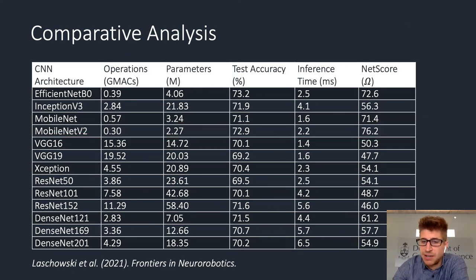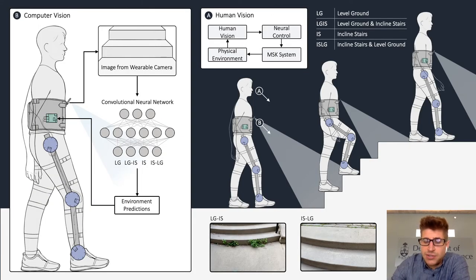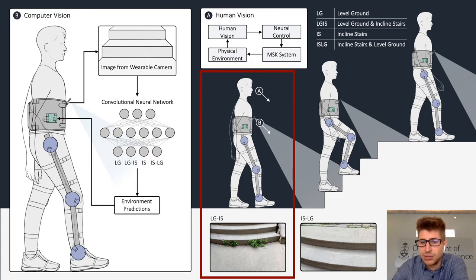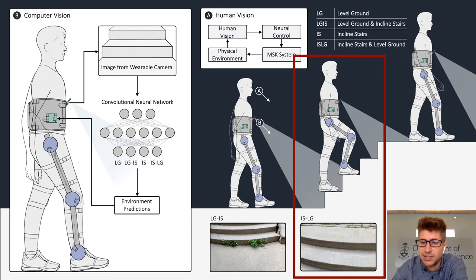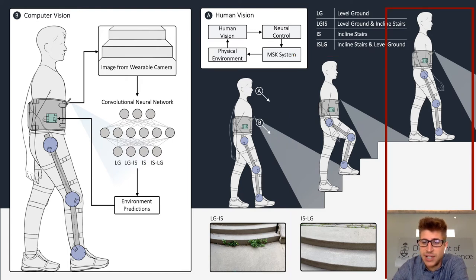Despite our best efforts, we weren't able to achieve classification accuracies higher than approximately 73% on the ExoNet dataset. This motivated us to take a more systematic approach and break down the computer vision problem into smaller series of locomotor activities. We started with stair recognition because it presents one of the greatest safety risks to older adults and rehabilitation patients. We focused on four main environmental states: level ground transition to incline stairs, steady-state incline stairs, incline stairs transition back to level ground, and finally steady-state level ground terrain.